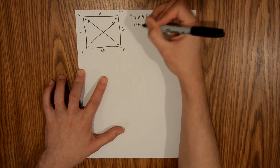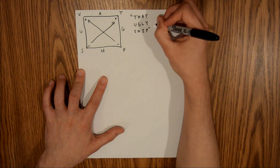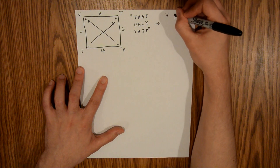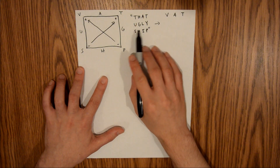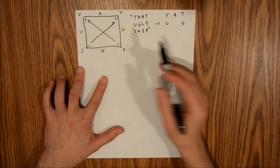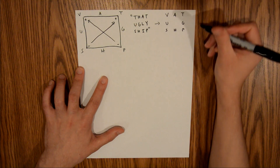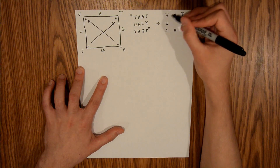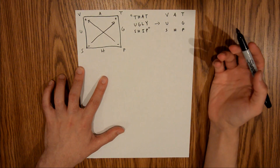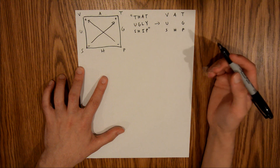"That ugly ship." Ugly can be shortened to UG, and ship, if you just remove the I, you get SHP. And so if you look here, all of these letters are the same things you see on the square. That's how I remember where to place each of the variables and energies.